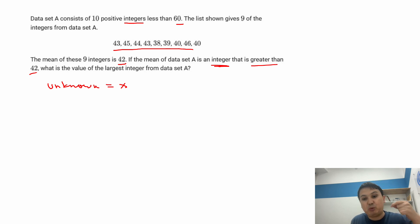and if I add one more and then take the average, if it becomes greater than 42, it would mean that x is more than 42. Because if x is equal to 42, then the mean would be again 42.